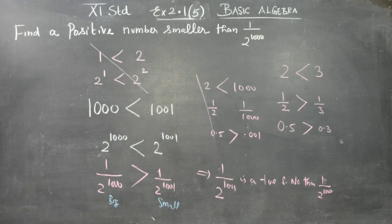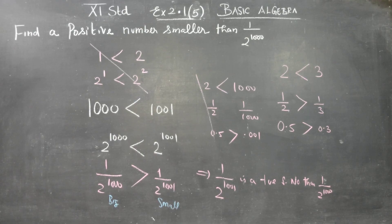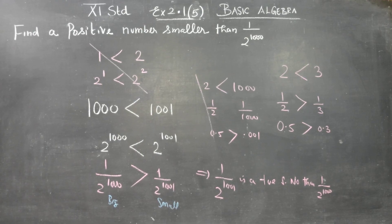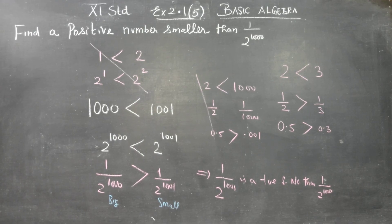Therefore, 1 by 2 power 1001 will be the positive smaller number than 1 by 2 power 1000. Thank you.